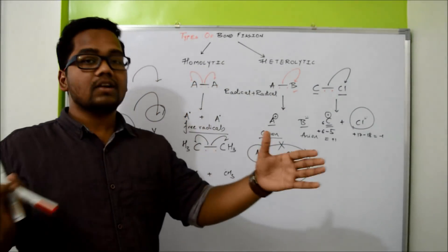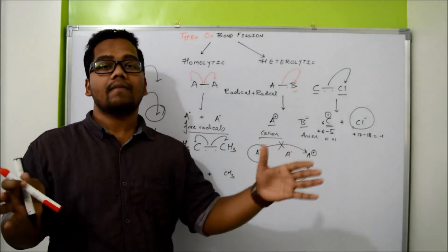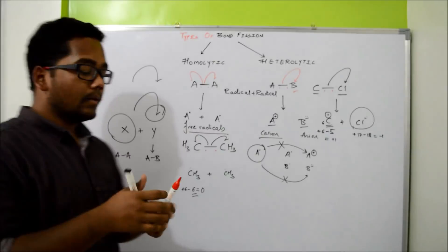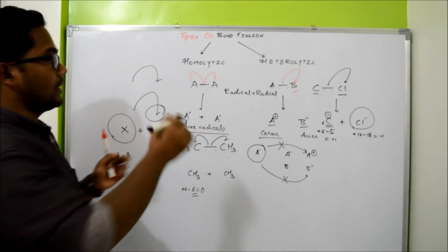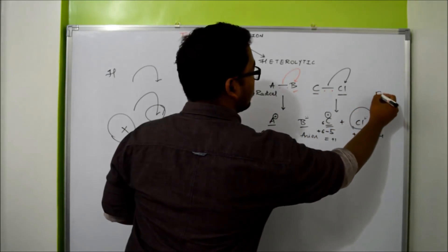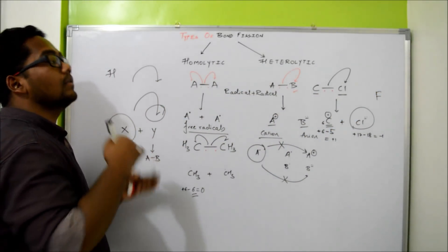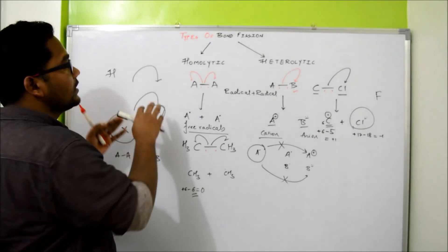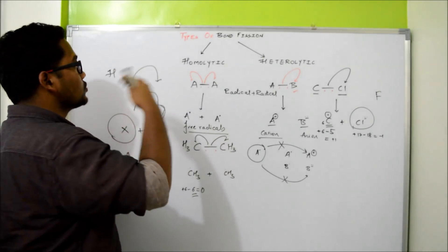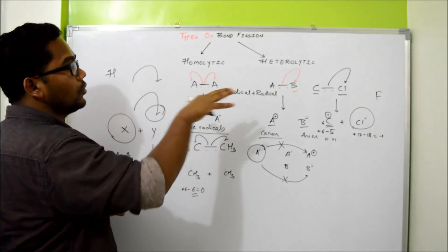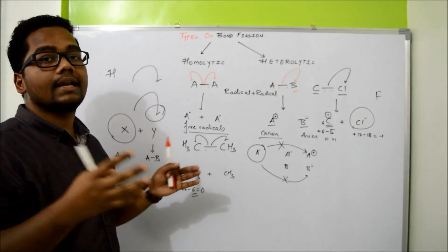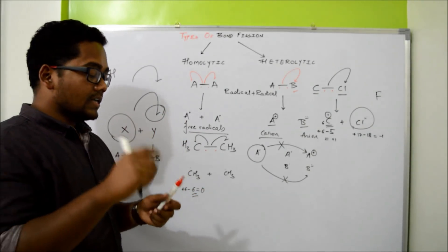To understand the electronegativity difference in a molecule, you don't need to remember exact electronegativity values — just remember the position in the periodic table. Hydrogen is at the extreme left of the periodic table; fluorine is at the extreme right. From left to right in the periodic table, electronegativity goes on increasing. So it is very obvious that the hydrogen-fluorine bond is a far more polar bond, and mainly it is an ionic bond because of the huge electronegativity difference.